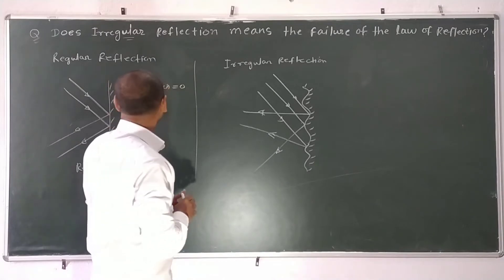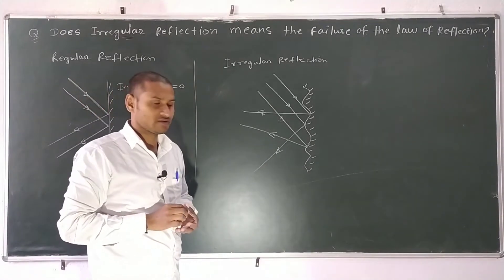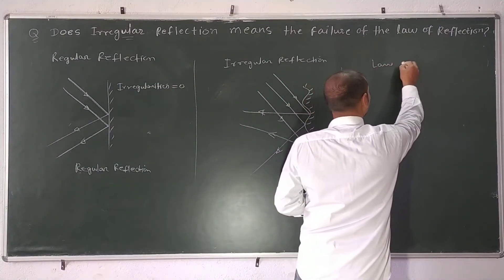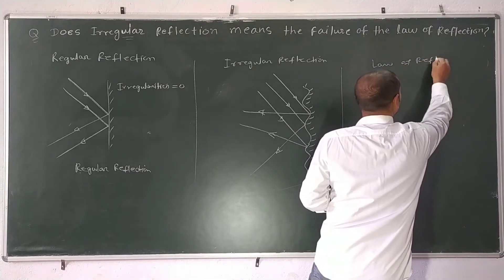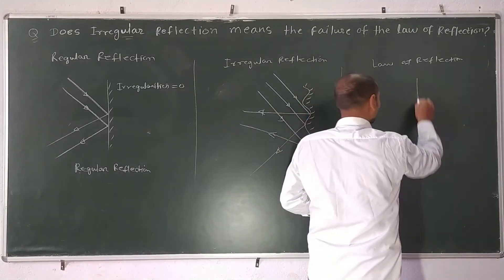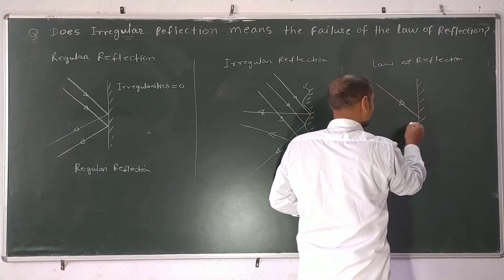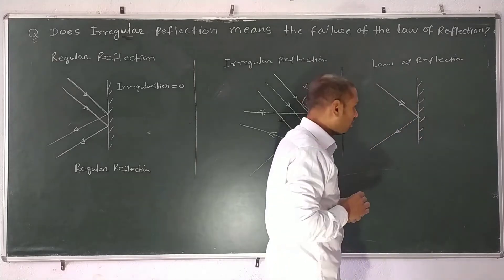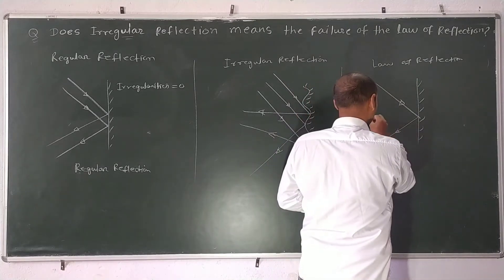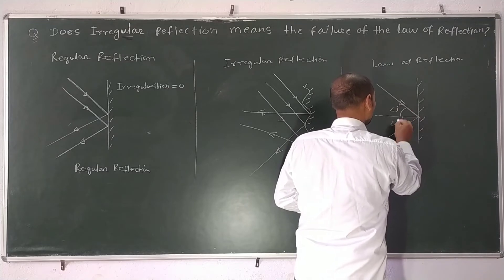This question is asking: does irregular reflection mean the failure of the law of reflection? So there is a law — the law of reflection. When an incident ray falls on the surface of a mirror or any object, the first law tells us that angle i equals angle r.